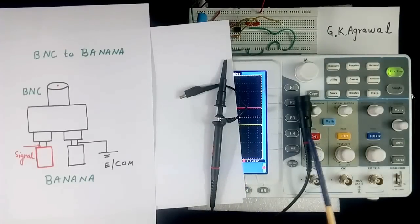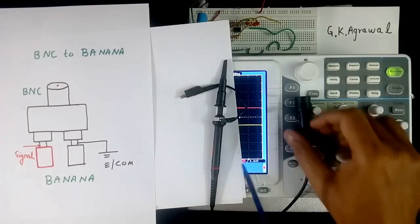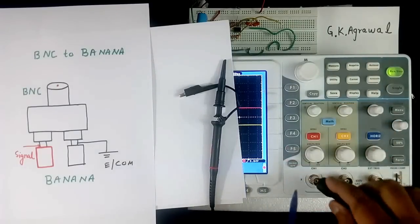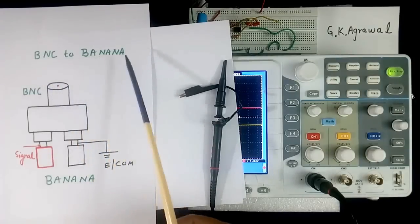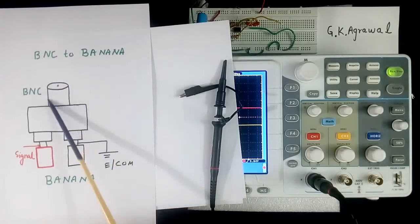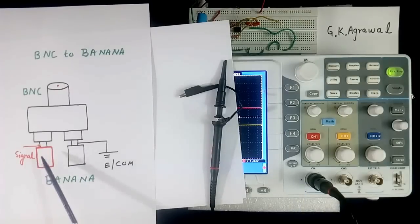Now I have one probe. This is 10 is to 1. This probe can be connected to one channel of scope like this. But if you don't have 10 is to 1 probe, you may have BNC to banana connector. Then this point will go here. And it will have 2 connections, one red color, one black color. Black color will go to common, and red color will go to signal, 1 channel.